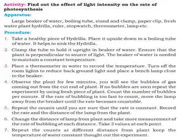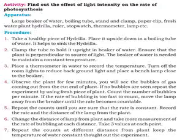There is an activity which shows how light intensity affects the rate of photosynthesis. For this experiment, the apparatus used includes a large beaker of water, a boiling tube (which is like a test tube), a stand and clamp, a paper clip, a fresh water plant called hydrilla, a ruler, a stopwatch, a thermometer, and a lamp.